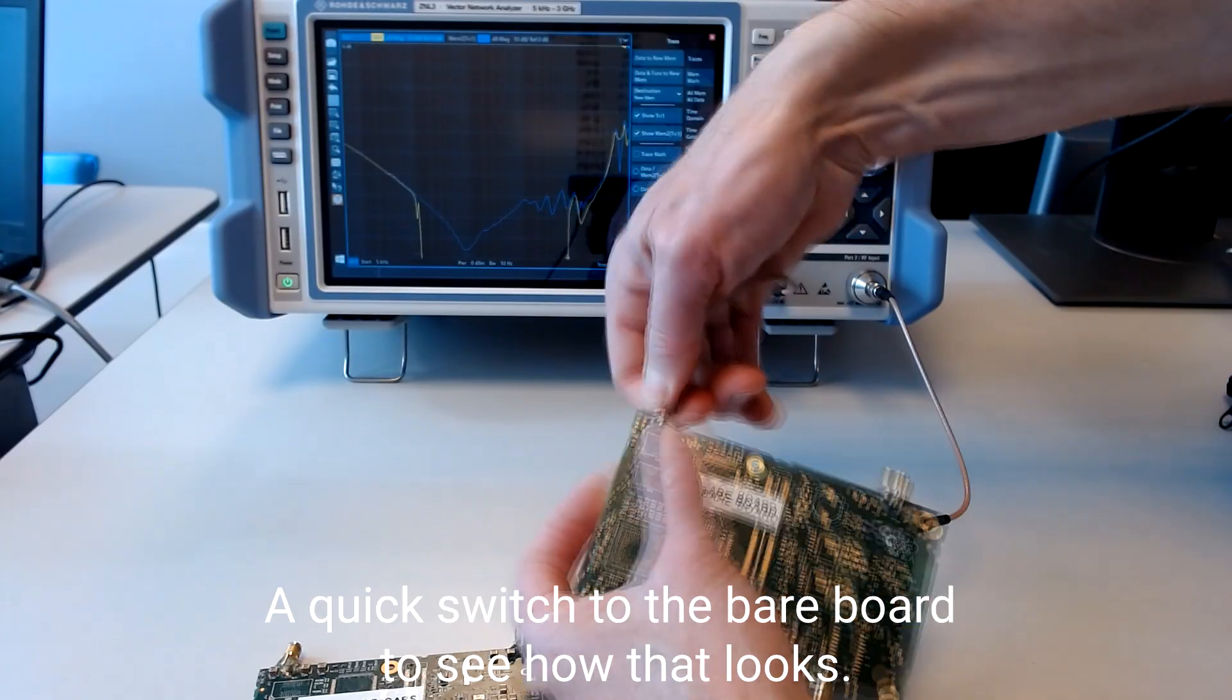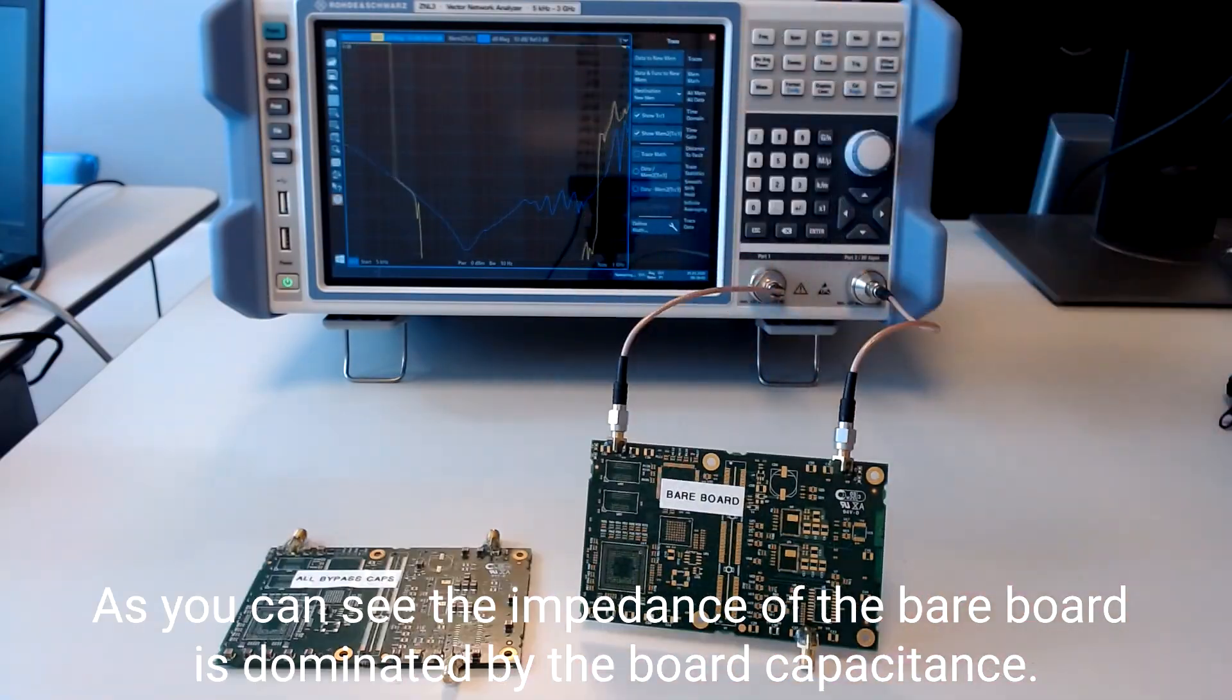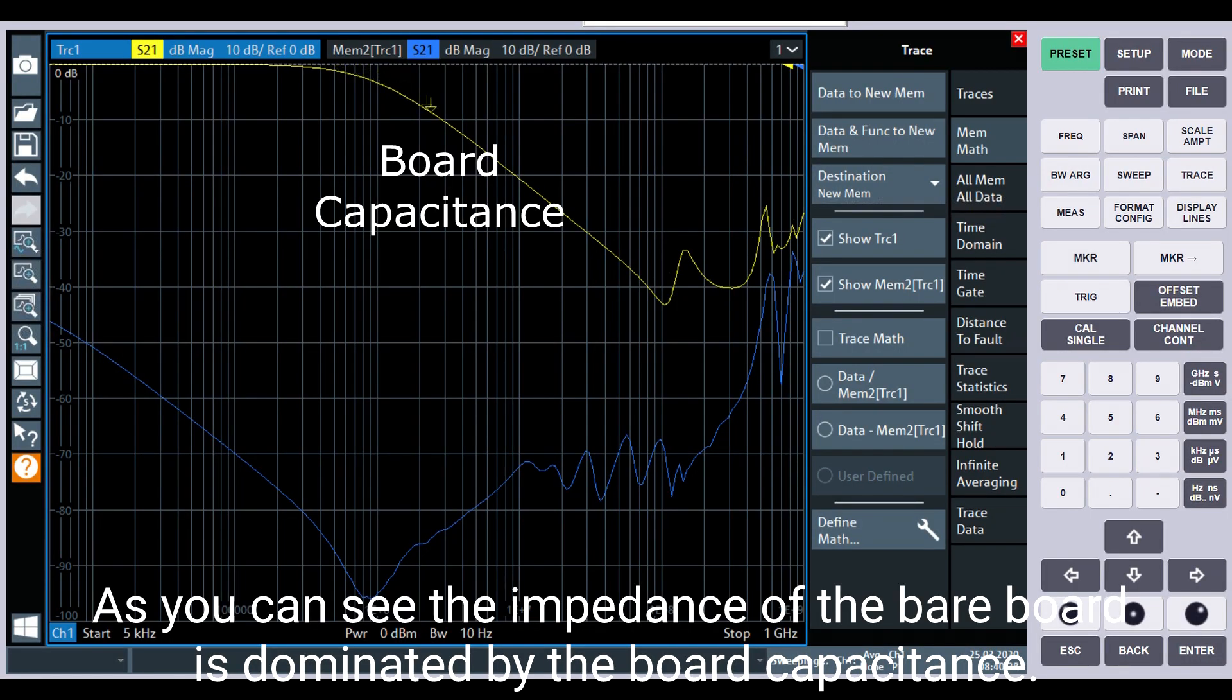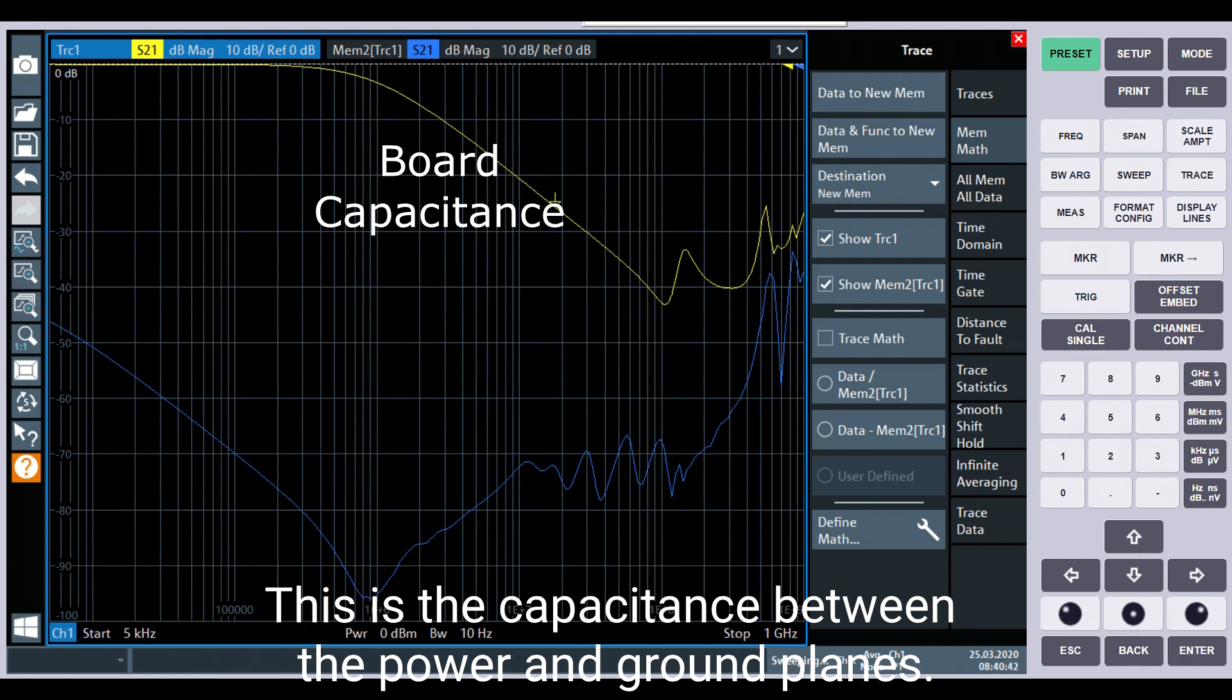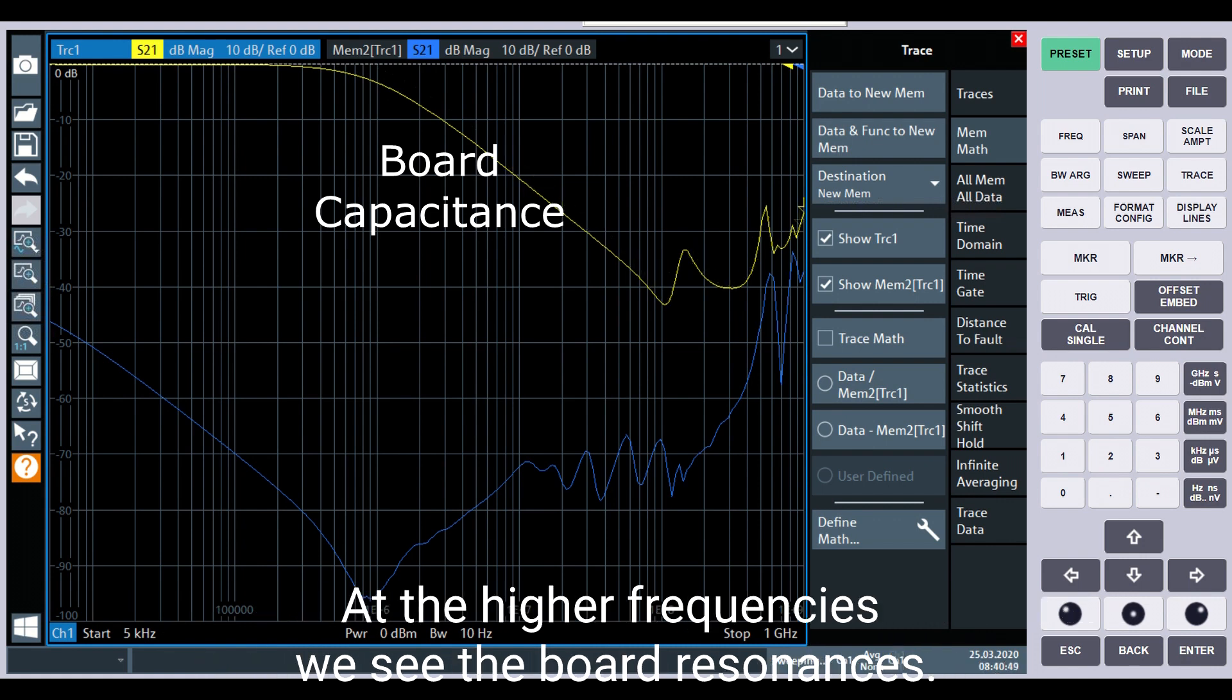A quick switch to the bare board to see how that looks. As you can see, the impedance of the bare board is dominated by the board capacitance. This is the capacitance between power and ground planes. At the higher frequencies, we see the board resonances.